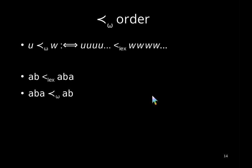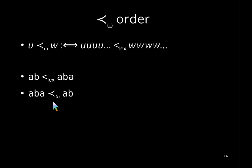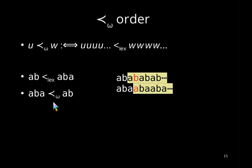Second, we look at the omega order, defined on strings. Given two strings U and W, U is smaller than W with respect to the omega order if the infinite concatenation of U is lexicographically smaller than the infinite concatenation of W. For example, AB is lexicographically smaller than ABA, but the opposite holds under the omega order—writing both as infinite strings, a mismatch at the fourth character shows ABA is actually smaller than AB under this order.